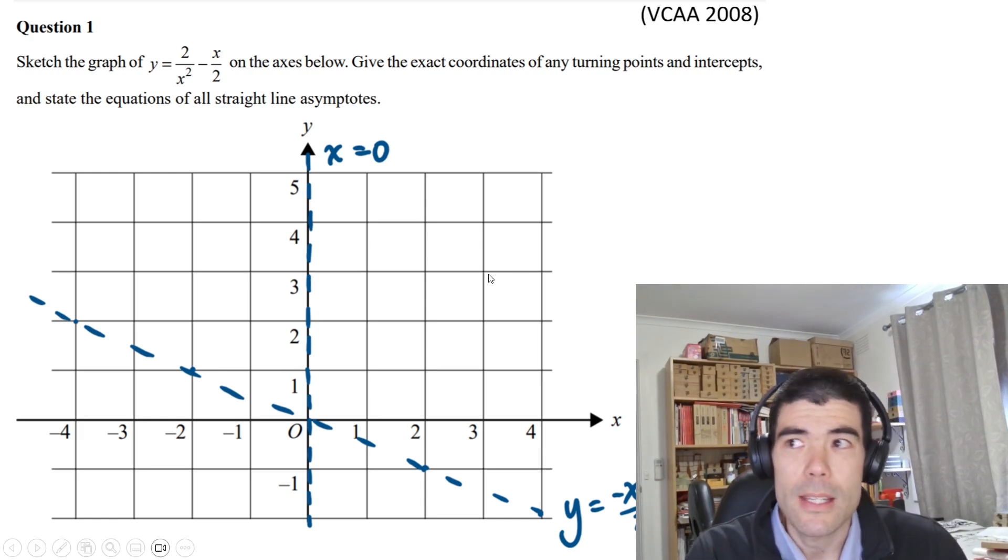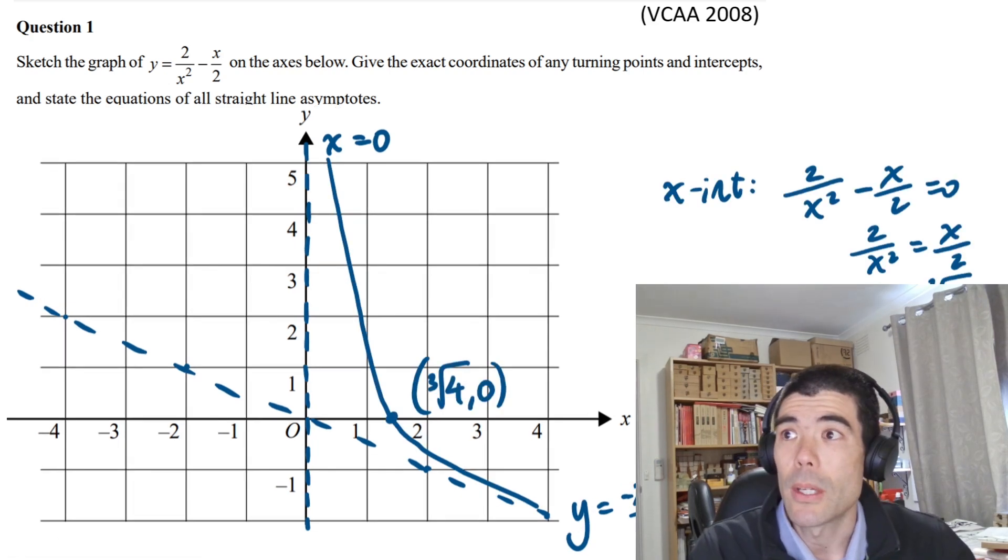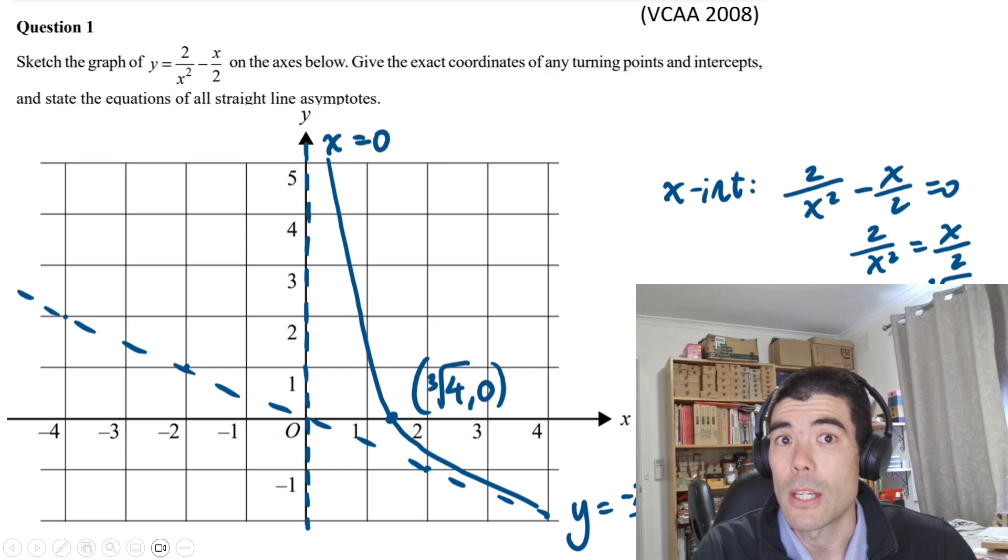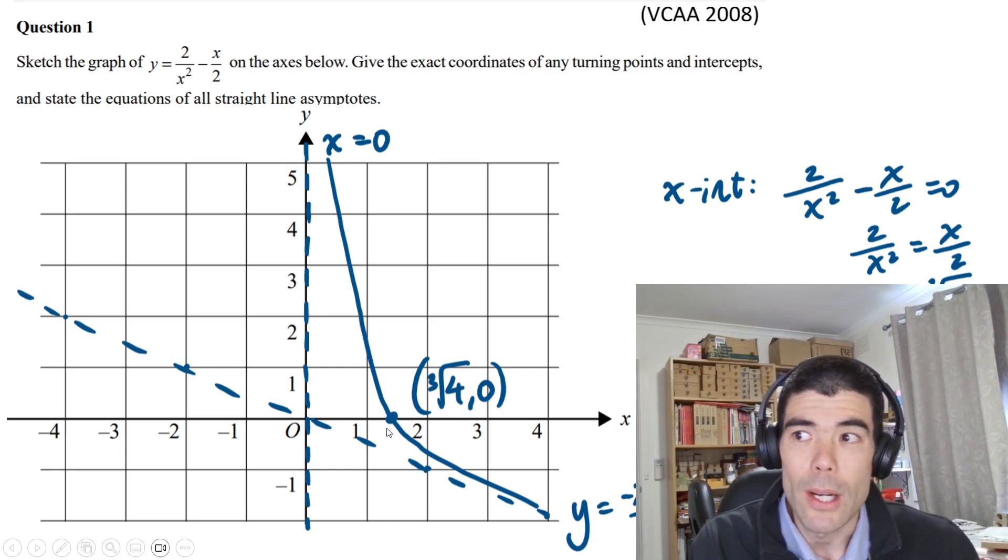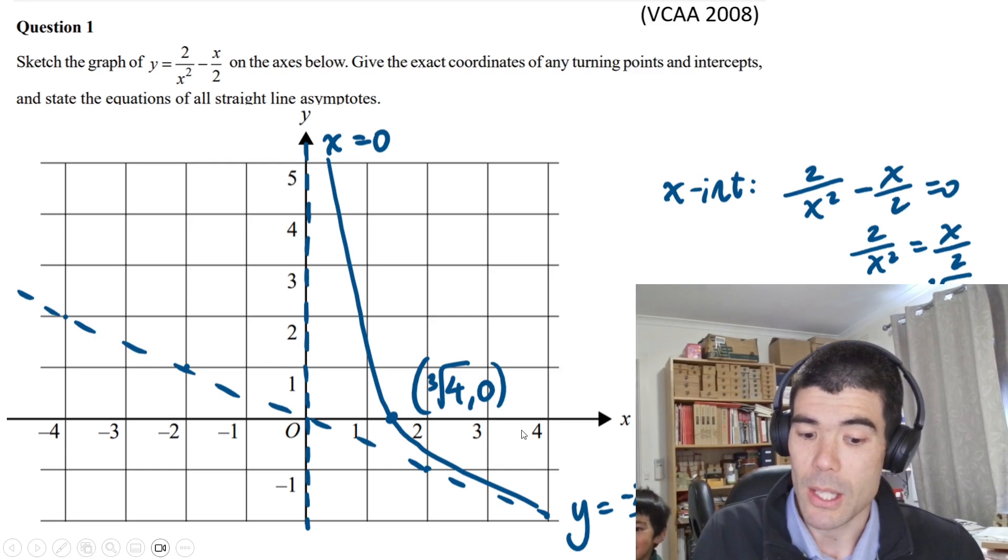There's not going to be a y-intercept because x = 0 is an asymptote. But there will be an x-intercept if we set y equal to zero. We can solve and find the x-intercept is at the cube root of 4, roughly somewhere between 1 and 2. We can work out that the graph has to approach the asymptotes, approaching the asymptote at x = 0 and the other one at negative x/2.